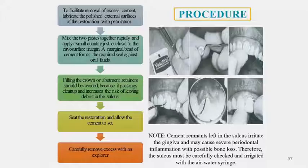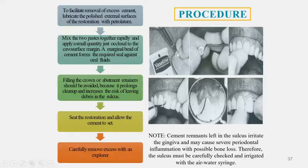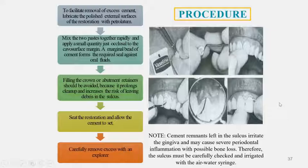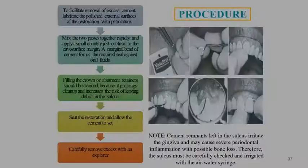For the cementation procedure, lubricate the external surface of the restoration to facilitate removal of excess cement. Mix the paste together rapidly and apply a small quantity just occlusal to the cavosurface margin, so that the marginal bead of cement forms the required seal against oral fluids. Overfilling the crown should be avoided. Seal the restoration and allow the cement to set, then carefully remove excess material with an explorer. Any cement remnants left in the sulcus will irritate the gingiva, may cause periodontal inflammation, and may lead to bone loss.